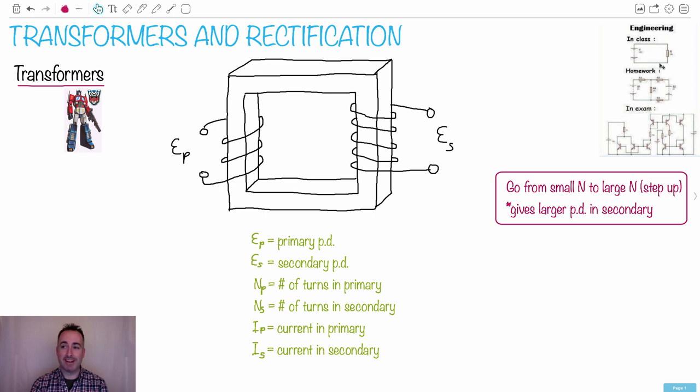In engineering, this could be in physics too. In class you do a super simple example. Homework, it's pretty complicated. And then on the exam, it's like some insane thing. We're going to talk about transformers because they're actually really important in everyday life. We use these all the time for our own electricity needs.